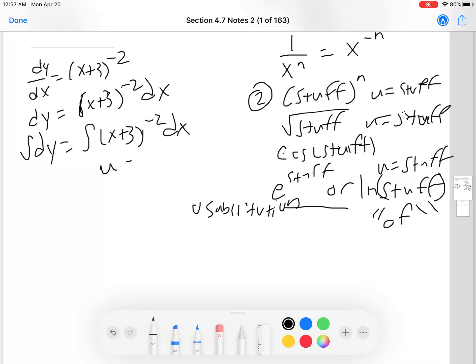So I'm going to write this as u equals x plus three, and du would be equal to dx, and lo and behold